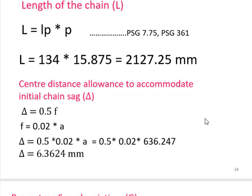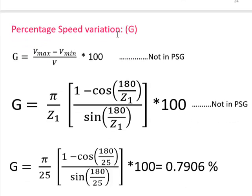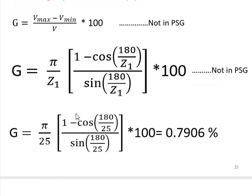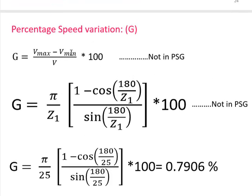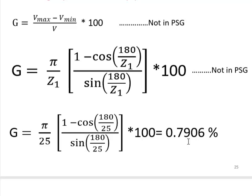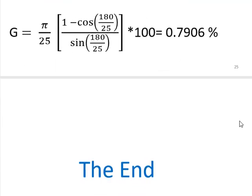The percentage speed variation is given by (Vmax - Vmin) / V, a formula found in VB Bhandari (not in the design data book). Substituting Z1, the speed variation comes to 0.79%. With this, the complete design of the chain drive is concluded.